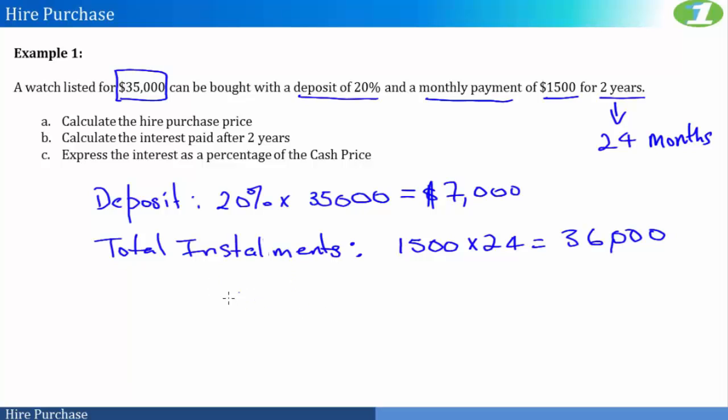And therefore, my total price for this item is $7,000 plus $36,000 under this hire purchase plan. So I'm paying in total $43,000 for an item that costs $35,000. So it actually makes sense to purchase upfront, but as you know, you may not have the money to purchase upfront. So the first thing that it asks us is to calculate the hire purchase price, which we did, which is $43,000.